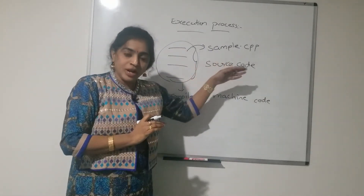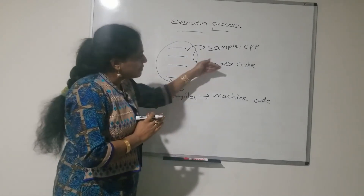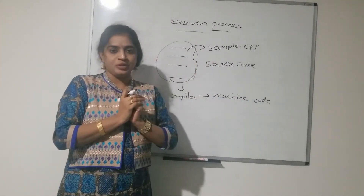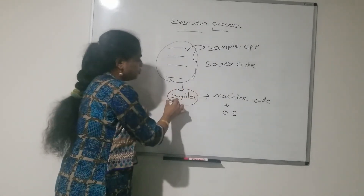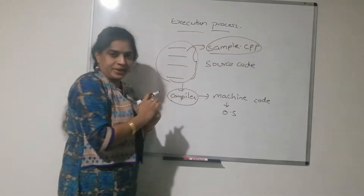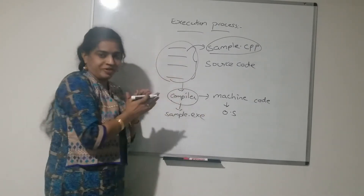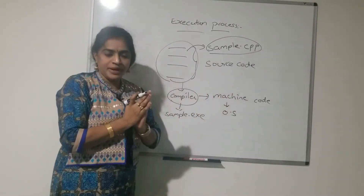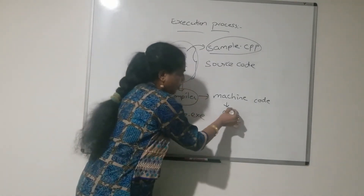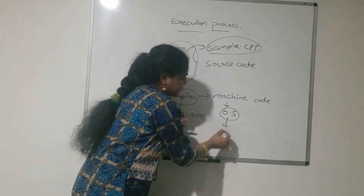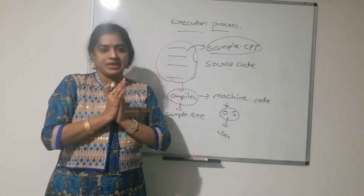Source code is user-understandable code — it is the code written by the user. The compiler, being a language translator, converts our source code to machine code, which is understandable by the operating system. The compiler converts sample.cpp to sample.exe. This executable file is machine code, understandable to the machine. It is then the job of the operating system to execute the code and display the result to the user.